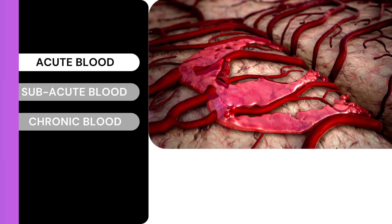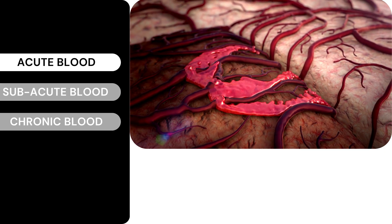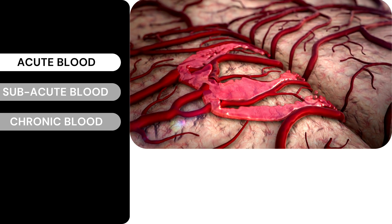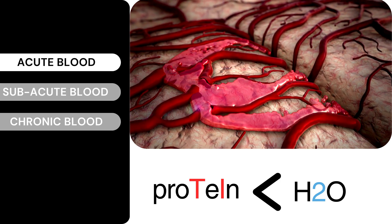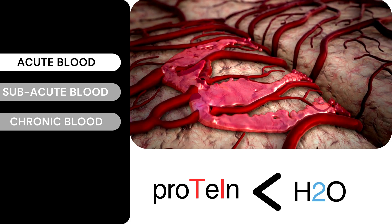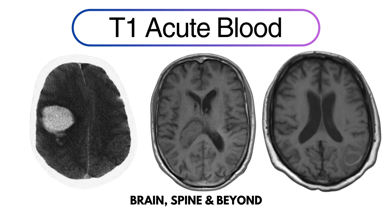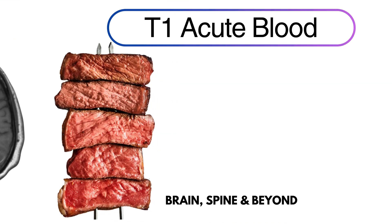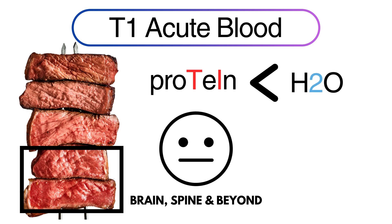Let's see how this translates to acute blood. In the acute stage, blood is pouring out of blood vessels, meaning it's watery — more water than protein. Since T1 loves protein and we don't have much protein here, the signal on T1 will be iso-intense. Using the steak analogy: a rare steak has more water, and you are kind of okay-ish with it — so it's iso-intense. Acute hemorrhage looks bright on CT scan, but on T1 MRI it will be iso-intense.